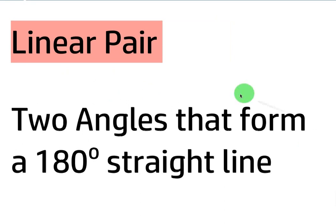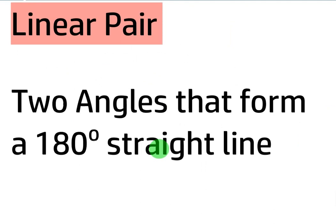Next we have a linear pair. Linear pair means two angles that form a 180-degree straight line. A linear pair, another name for that is actually supplementary, so supplementary and linear pair mean the same thing.